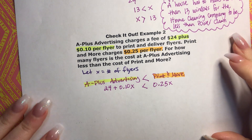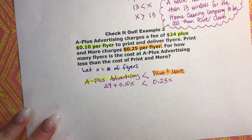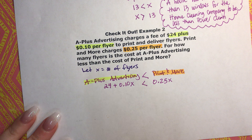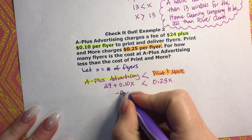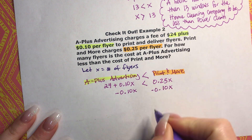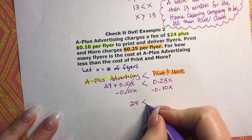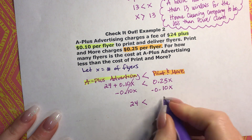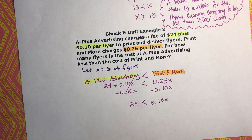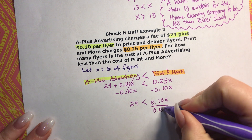We have our inequality and just need to get the variables on the same side. The 0.10X is already isolated on the left side, so we subtract 0.10X from both sides — that cancels. We're left with 24 is less than 0.25X minus 0.10X, which is 0.15X.